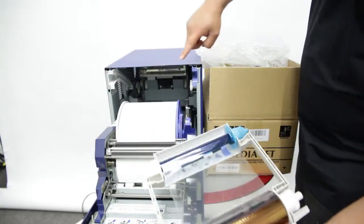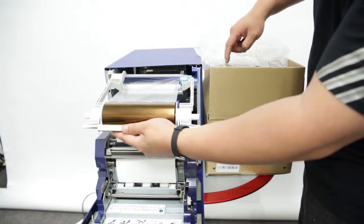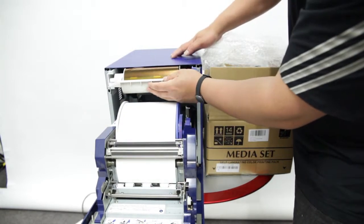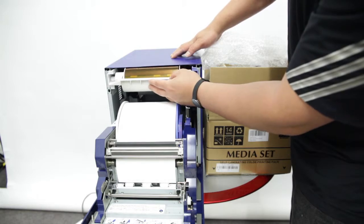Reinstall the printer ribbon tray by lining up the blue icons on the right. Fully insert the tray until it is right at the back.